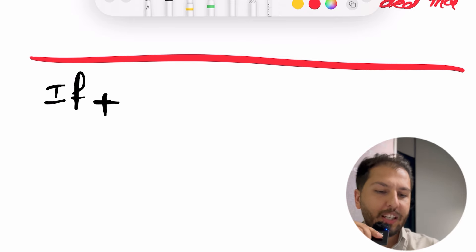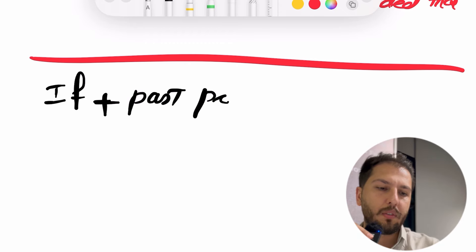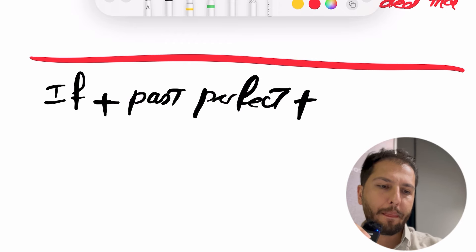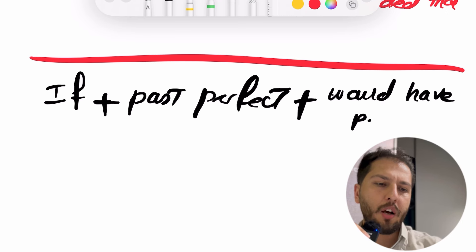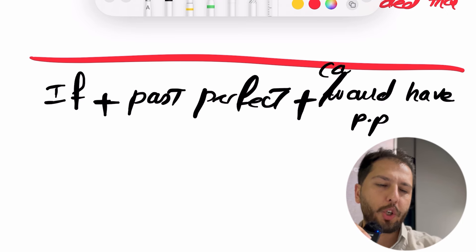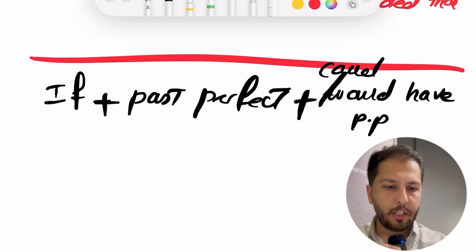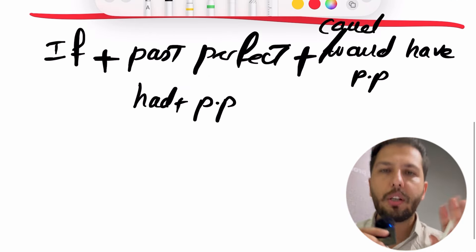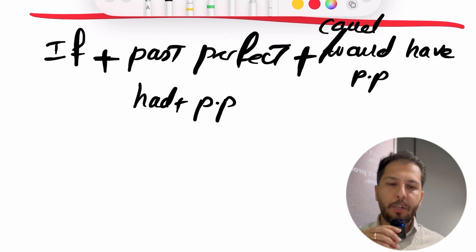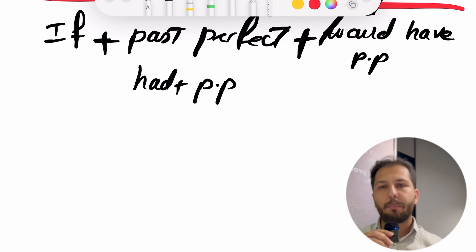ساختاری که برای شرطی نوع سه استفاده میشه: if به علاوه past perfect، به علاوه would have + PP یا could have + PP. Past perfect یعنی ماضی بعید — یعنی had به علاوه PP. ساختار past perfect رو حتما در موردش بخونید.